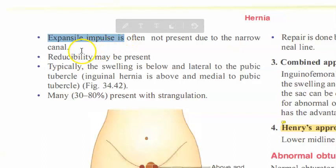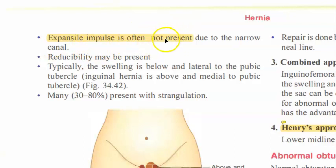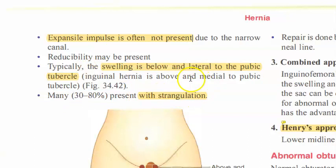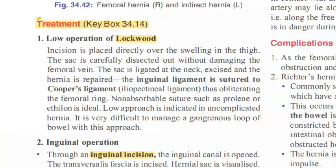An expansile impulse on coughing is not present because the canal is narrow. Reducibility may be present if there are no adhesions — this can help differentiate it from an inguinal hernia. The swelling is below and lateral to the pubic tubercle. Strangulation may occur due to the narrow ring and canal.